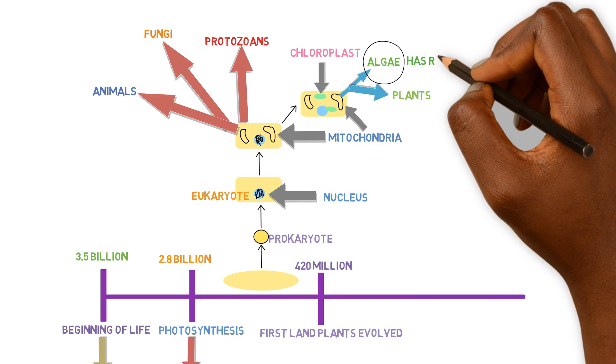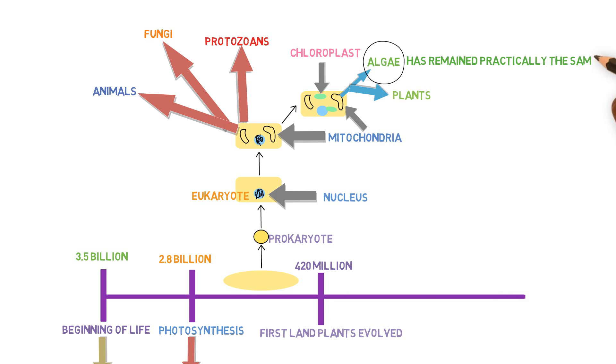Algae still closely resembles what it was over 1 billion years ago. It still has the same characteristics and features. Why? Because it thrives in the environment it's in. It has no reason to mutate or evolve into something else. Algae is still out-competing all modern-day plants. Even though it's fundamentally basic and not complex, it's complex enough for the environment it thrives in.